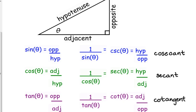You may not have seen the other three. We call these the reciprocal trig ratios because they are the reciprocal. You flip over sine to get cosecant. So the abbreviation is CSC, cosecant. It's the hypotenuse over the opposite.